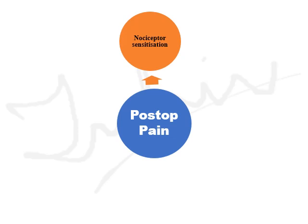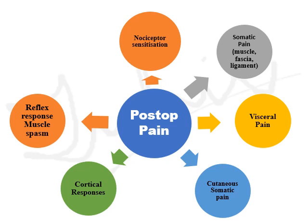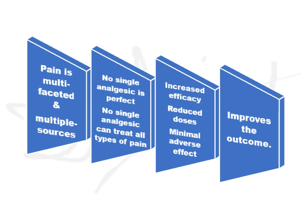If we look at the characteristics of postoperative pain, it is of various natures: nociceptive sensation, somatic pain involving muscle and fascial ligament, visceral pain, cutaneous somatic pain, cortical responses, reflex muscle spasm, and referred pain. All these types of pain cannot be treated by a single analgesic. We need multiple analgesics or multiple modes or techniques. Using different types of analgesics will increase efficacy, reduce the doses, and minimize the adverse effects, which ultimately leads to improved outcome.